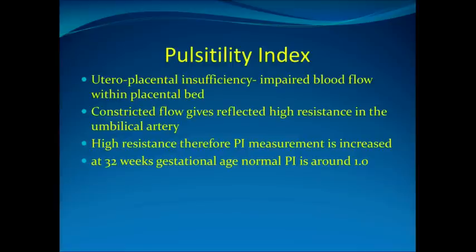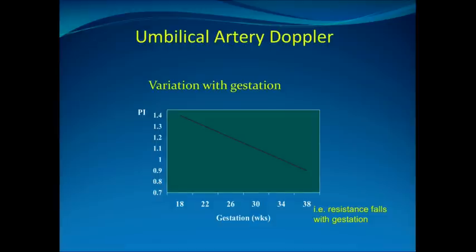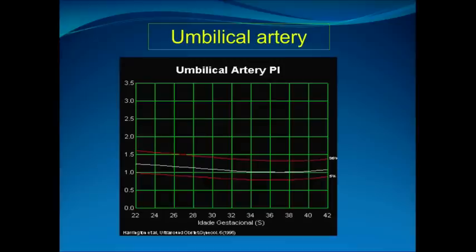At 32 weeks gestational age, the normal pulsatility index is around one. The umbilical artery pulsatility index does vary with gestation, and the chart shows the PI at various stages. Resistance falls with gestation, so a PI above one at 18 weeks is within the normal range, but a PI of 1.4 at 38 weeks would be considered high. This is the Nicolaides chart, which gives the expected pulsatility index range with upper and lower limits related to gestation.